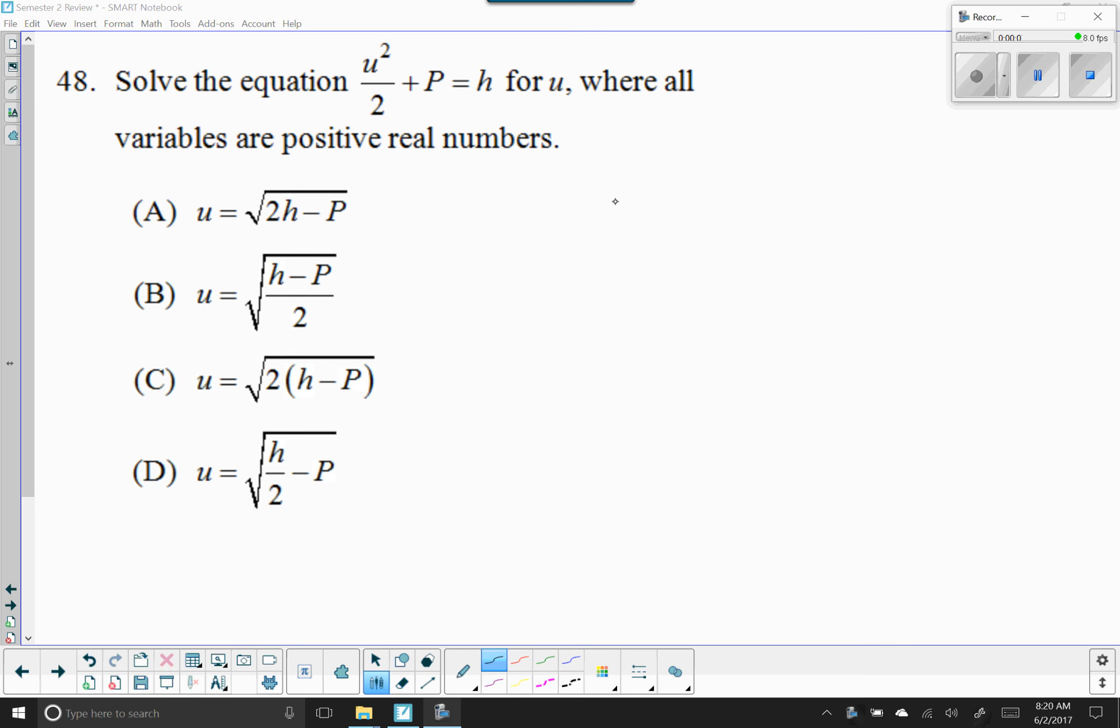So u squared over 2 plus p equals h. Well we're adding p, so we're going to subtract p. U squared divided by 2 equals h minus p.